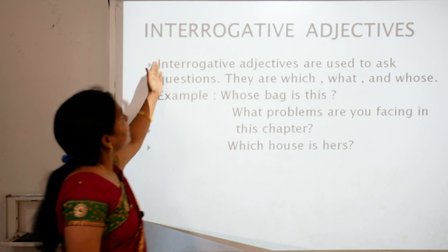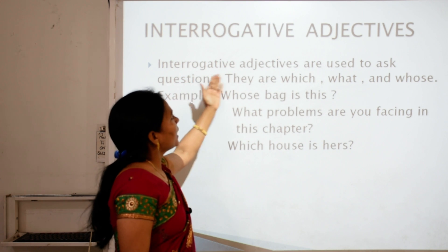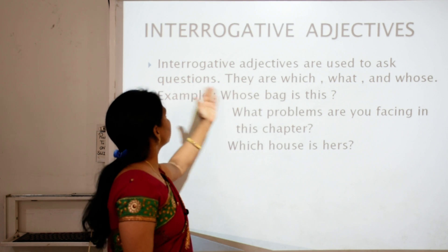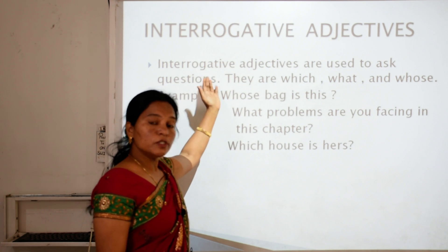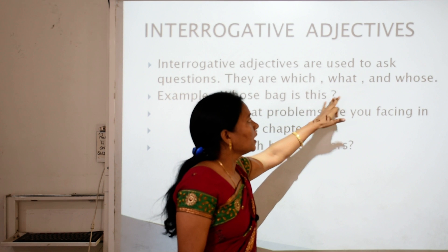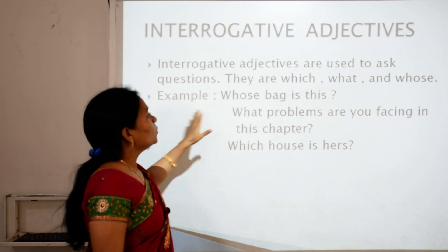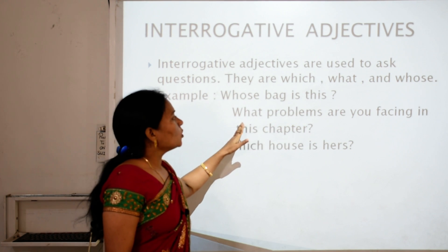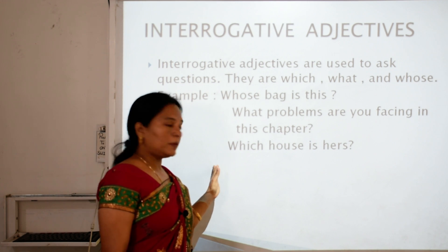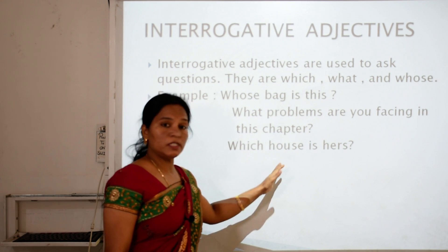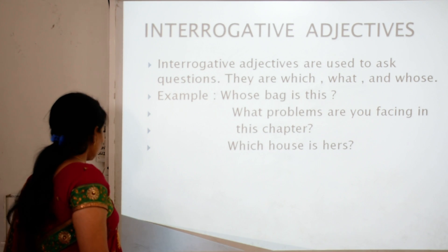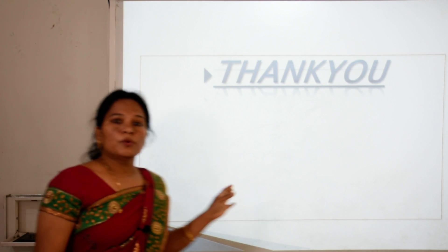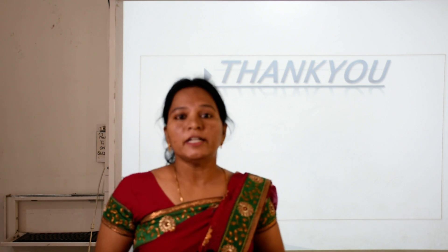Finally, interrogative adjectives are used to ask questions. They are: which, what, and whose. For example: 'Whose bag is this?' 'What problems are you facing in this chapter?' 'Which house is hers?' So children, I hope you understand adjectives and the types of adjectives very well. Thank you.